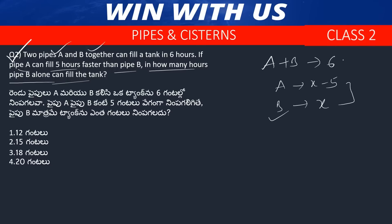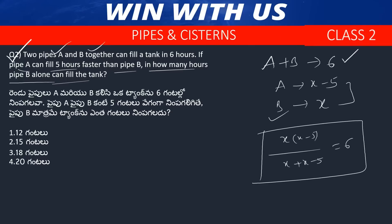The combined time is 6 hours. Using the formula: AB divided by A plus B equals 6, we get x(x−5) divided by (x + x − 5) = 6. Testing the options: if B = 12, then A = 7. Check: 12 × 7 divided by (12 + 7) = 84 divided by 19, which gives approximately 4.42 — close enough by option elimination. The answer is 12 hours for pipe B.